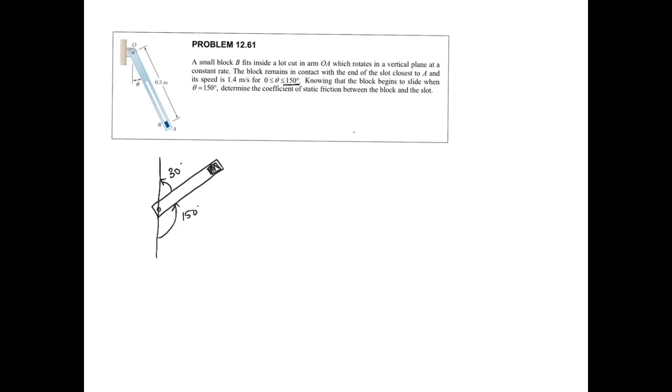And it's asking us for that moment right before the block slips. So if we draw the free body diagram of the block, we've got the weight of the block going down, which is mass times gravity, we've got the normal force from the slot, and we've got a force of friction here that's keeping it up in place.